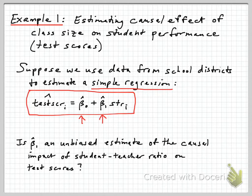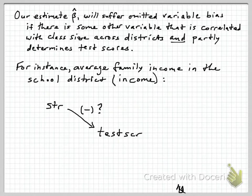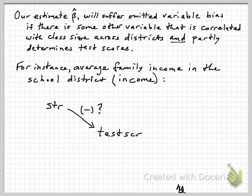Is the beta hat we obtain from this simple regression an unbiased estimate of the causal impact of student-teacher ratio on test scores? We can think of lots of reasons why it might not be a good estimate of the causal effect. In particular, this estimate — beta 1 hat for the slope — will suffer from omitted variable bias if there's some other variable correlated with class size across districts and that at least partly determines test scores itself. Consider the possibility that average family income in the school district also affects the test score, and we haven't put that in the regression yet.